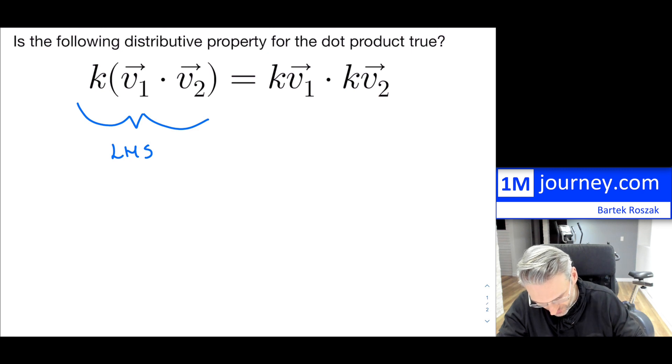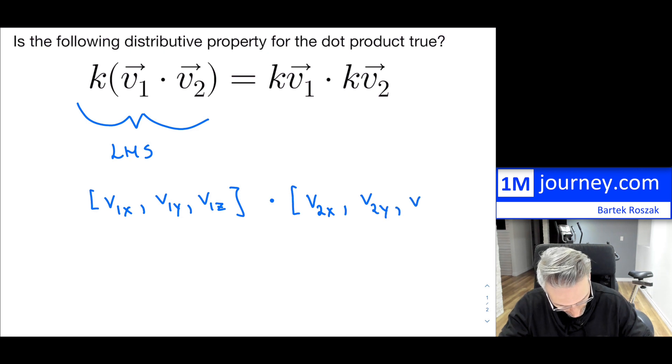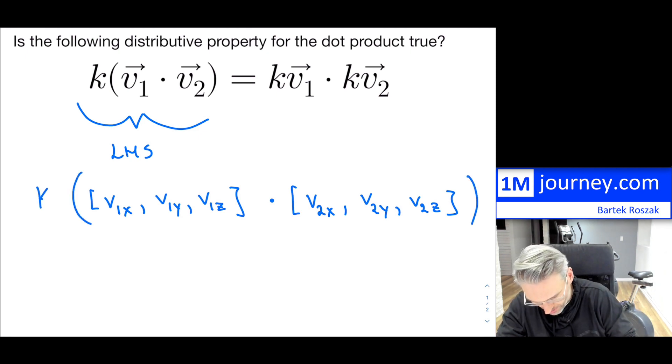This is the left-hand side of this particular property that is given. So what we would have is we have two vectors. I'm going to take the first vector and break it down into its Cartesian format. So that would be V1X, V1Y, and V1Z. That is my vector one and I want to be able to dot it with my second vector and that will be V2X, V2Y, V2Z.